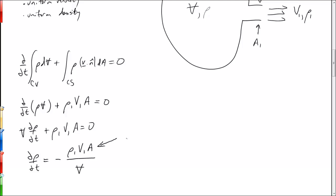if you remember correctly this is just the mass flow rate and so the change in density is just equal to the mass flow rate out of the system divided by the volume and it's negative because the density will be going down as mass is leaving the system